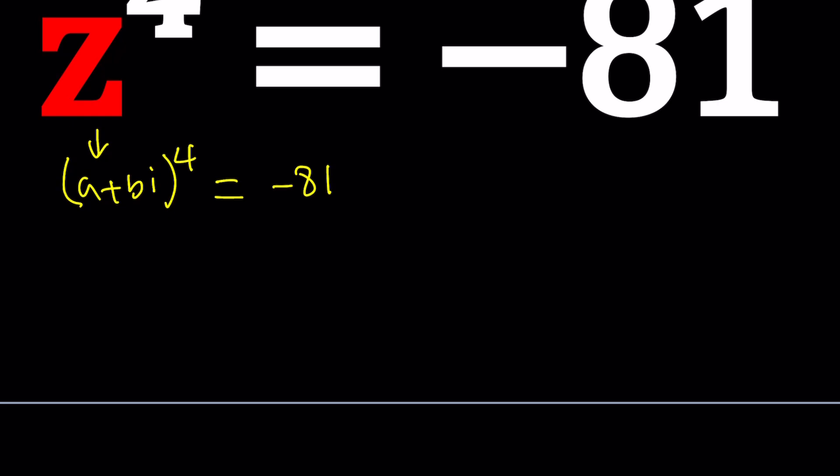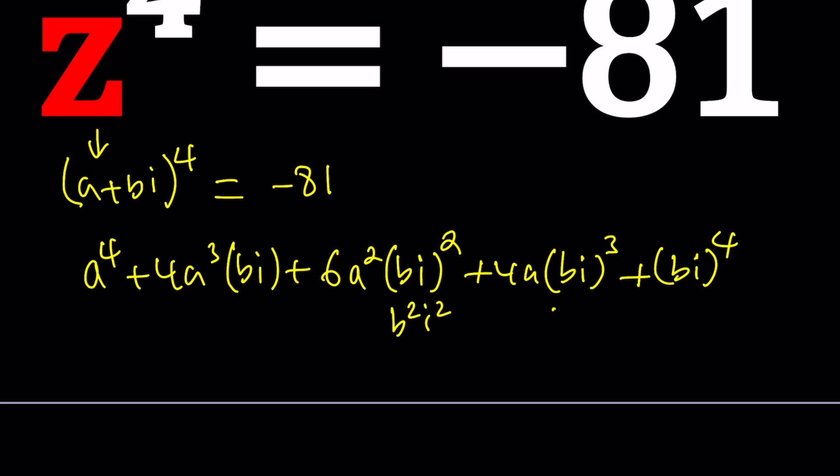What you can do is you can use the binomial theorem. You know A to the fourth plus 4A cubed times BI plus 6A squared times BI quantity squared plus 4 times A times BI quantity cubed. And finally the coefficients are 1 4 6 4 1. The last term is just going to be the fourth power of BI.